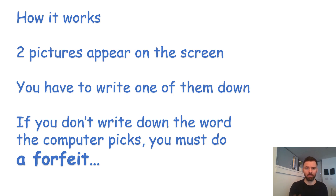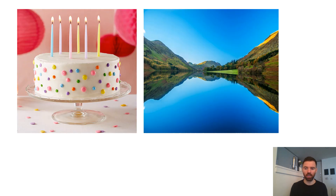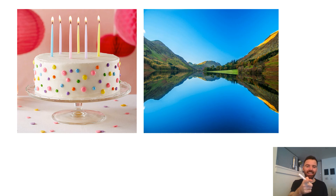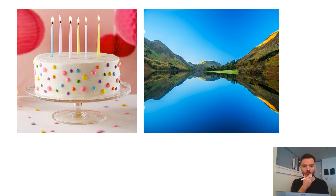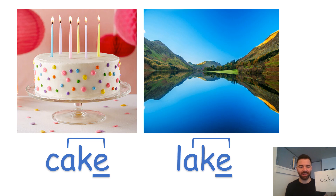We're starting with the 'a' sound — words with that A. So I've got to write down one of these. That's a cake and that's a lake. Cake or lake? I've written my word — have you written yours? I went with cake. Let's see if I spelled it right. Excellent, fantastic — cake! And lake as well. Love that.